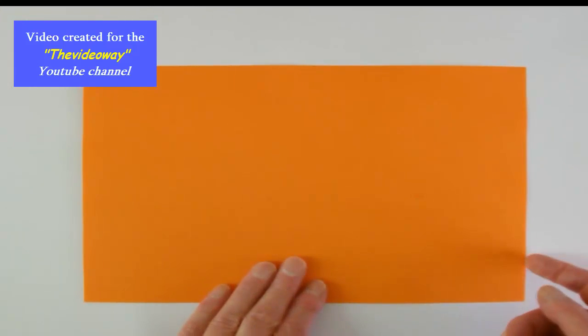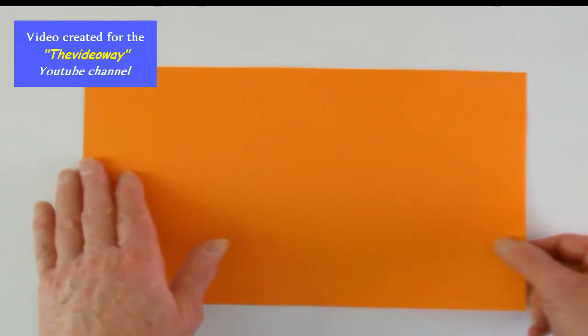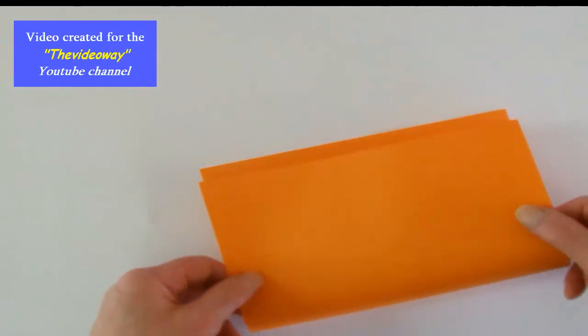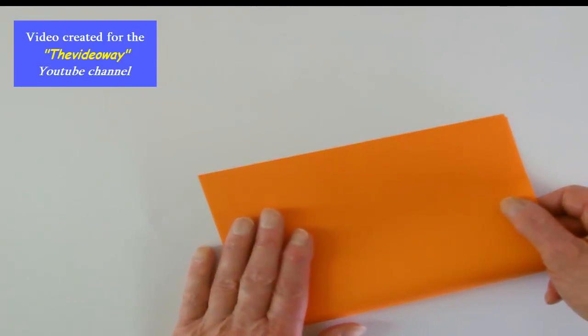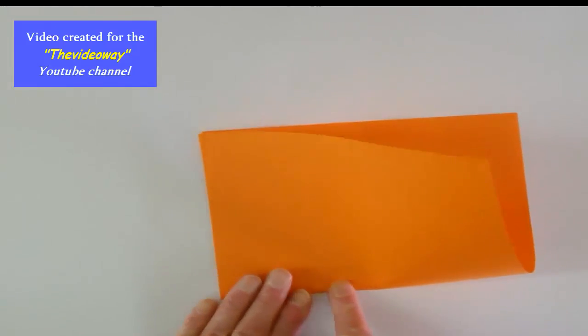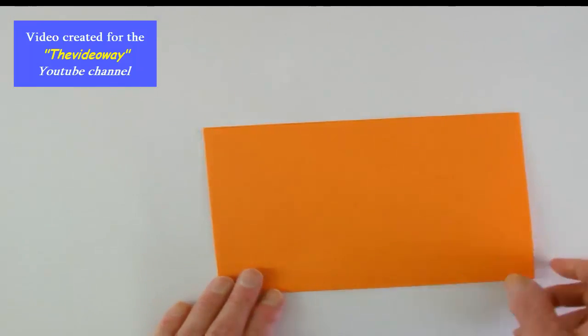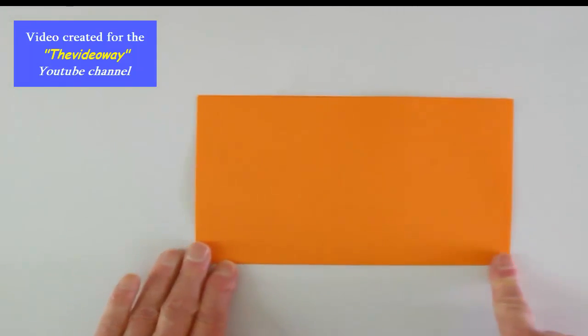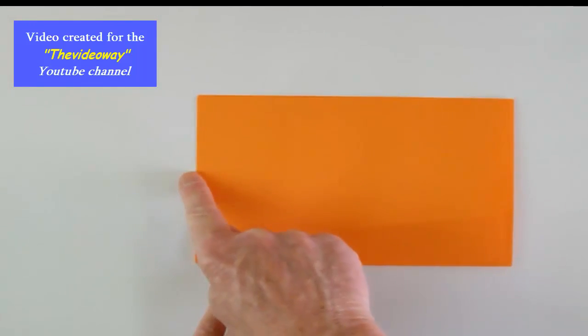Now take this side here and fold it over to the top side and crease down. Now take this side and fold it over to this side.